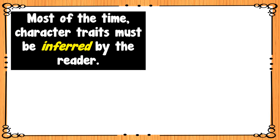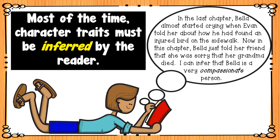Most of the time, character traits must be inferred by the reader. To infer means to make an educated guess based on the things that we're seeing in what we are reading. In the last chapter, Bella almost started crying when Evan told her about how he had found an injured bird on the sidewalk. And now in this chapter, Bella just told her friend that she was sorry that her grandma died. I can infer that Bella is a very compassionate person.